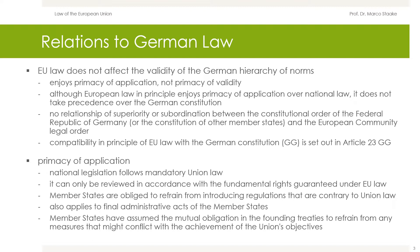In so far as there is no conflict between national law and Union law, national law must be observed by the national authorities and courts of the respective member state. On the other hand, those standards of Union law which are directly applicable enjoy priority of application over the national law of the member states. The question of whether a Union law standard is directly applicable is only relevant if it provides for a legal consequence for the same facts that contradicts national law. A directly applicable provision gives the individual a subjective right vis-à-vis a member state and has the same effect as national law.